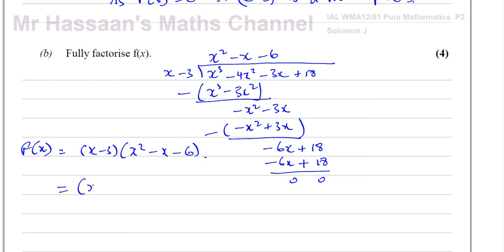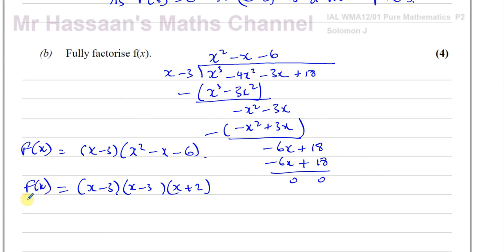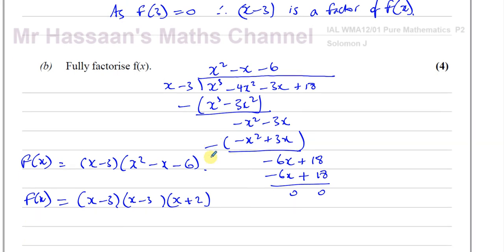Now we factorize the quadratic x squared minus x minus 6. We need two numbers that multiply to give negative 6 and add to give minus 1. That's 2 and negative 3. So x squared minus x minus 6 factors as x plus 2 times x minus 3. Therefore, f(x) is fully factorized as x minus 3 squared times x plus 2. That completes part B.